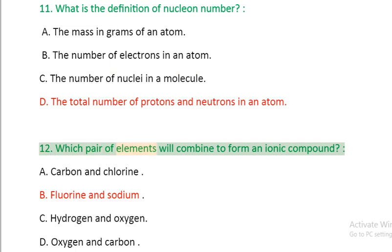Question 12: Which pair of elements will combine to form an ionic compound? A. Carbon and chlorine, B. Fluorine and sodium, C. Hydrogen and oxygen, D. Oxygen and carbon.